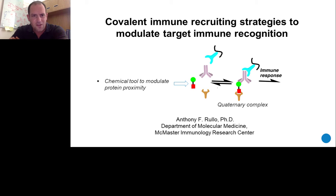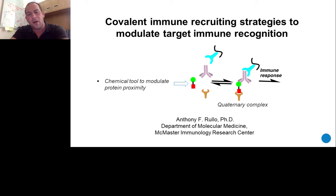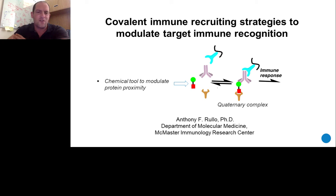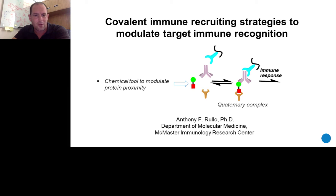In this application, the bifunctional molecule brings antibodies already present in the bloodstream to target cancer receptors on a cell surface, increasing proximity between these two biological components. When immune cell receptors see the antibody localized to the surface of a target cell, that causes receptor clustering and activation, leading to immune function and cytotoxicity against the target cell — which in the case of cancer cells can eliminate the cancer, representing a viable immunotherapeutic outcome.